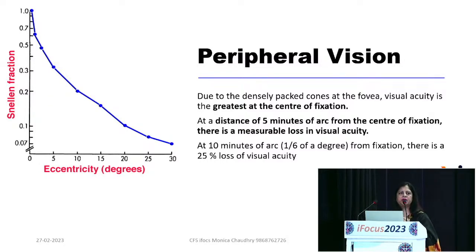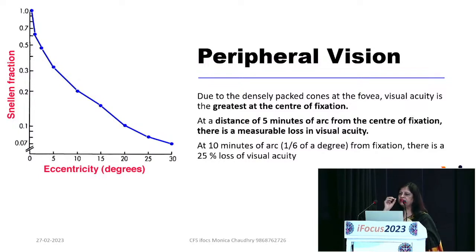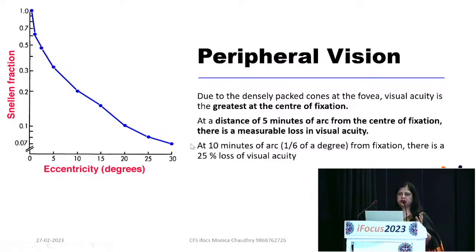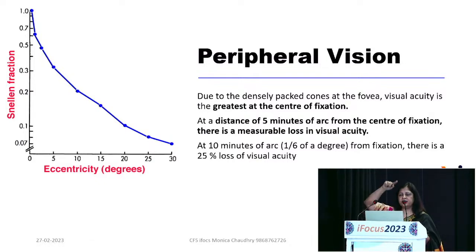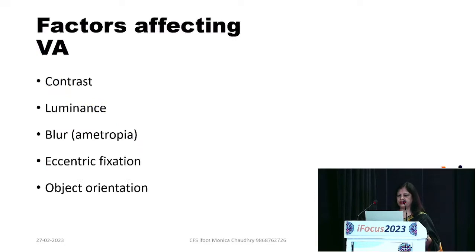This is important when measuring visual acuity in patients with central field loss or macular pathology. If the center is damaged and the patient uses peripheral vision, the thresholds significantly drop. The best vision is right at the center, and the curve drops steeply — so peripheral vision will be significantly reduced if the center is damaged.